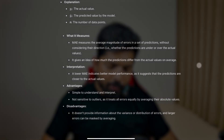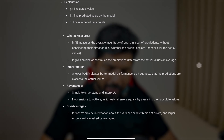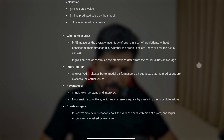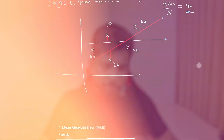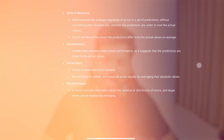A lower MAE indicates better model performance, suggesting predictions are closer to actual values. Advantages: it is simple to understand and interpret, and it is not sensitive to outliers since it treats all errors equally by averaging absolute values. Disadvantage: it doesn't provide information about the variance or distribution of errors, and larger errors can be masked by averaging — outliers get averaged out and are not clearly identifiable.